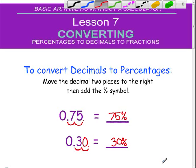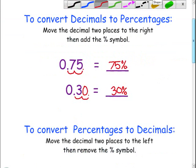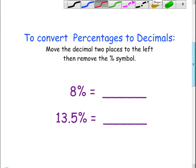Now let's try the reverse operation. In this case we're going to convert percentages to decimals. So it's just exactly the opposite. You're going to take the percentage sign off and you're going to move your decimal two places to the left.